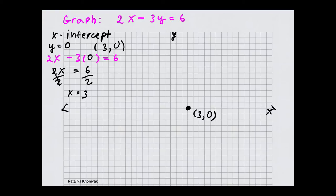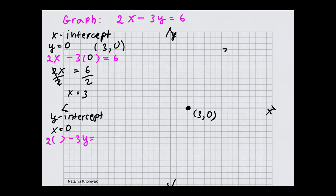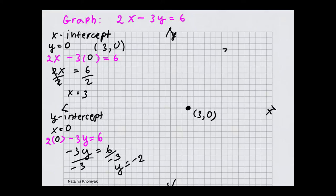The other intercept will be on the y-axis. To find the y-intercept, we set x equal to 0. Here's our equation: 2x minus 3y equals 6. We substitute 0 for x, so anything times 0 is 0. We get negative 3y equals 6. Dividing both sides by negative 3, y is equal to negative 2. Our point is (0, negative 2).